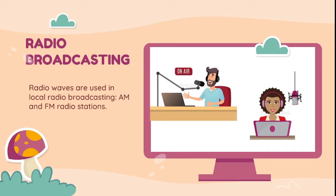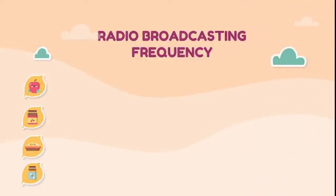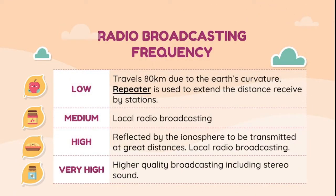Radio waves are used in local radio broadcasting, such as AM and FM radio stations. There are various frequency measures used in radio broadcasting. First is the low frequency, which travels 80 kilometers due to the Earth's curvature. A repeater is used to extend the distance received by the station, which is why even in rural and mountainous areas, an analog radio can detect signals from specific radio stations.